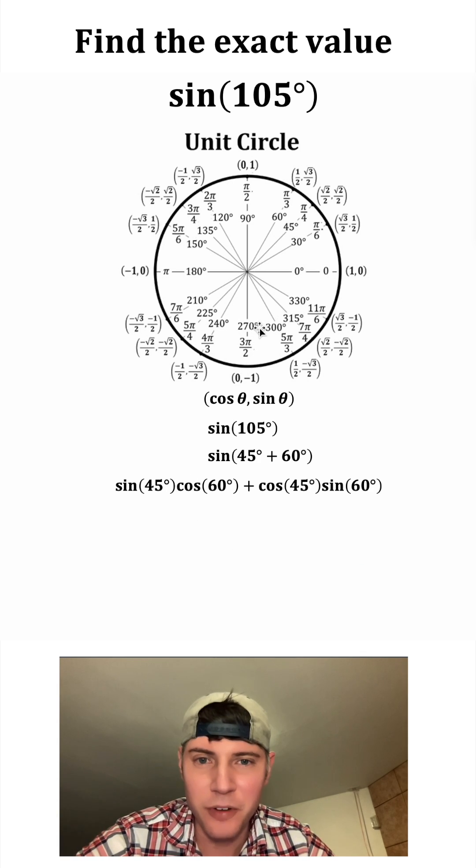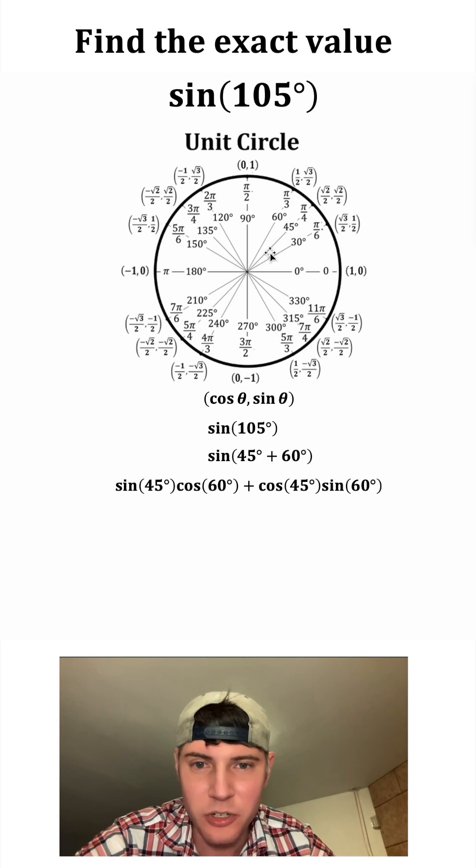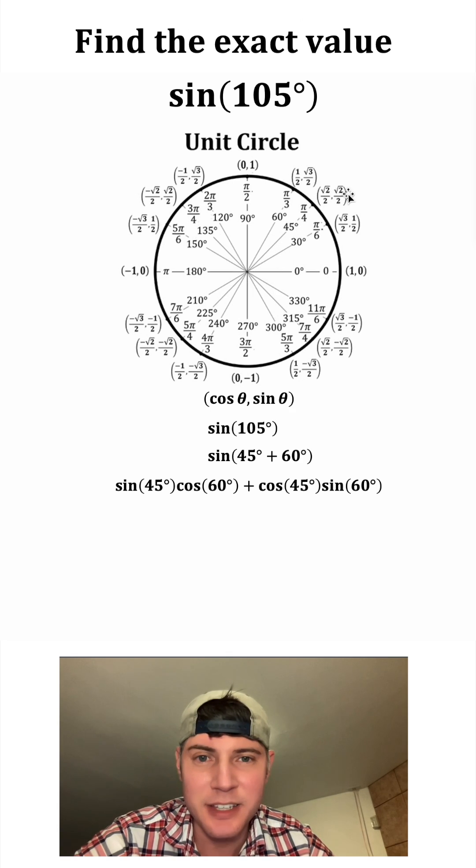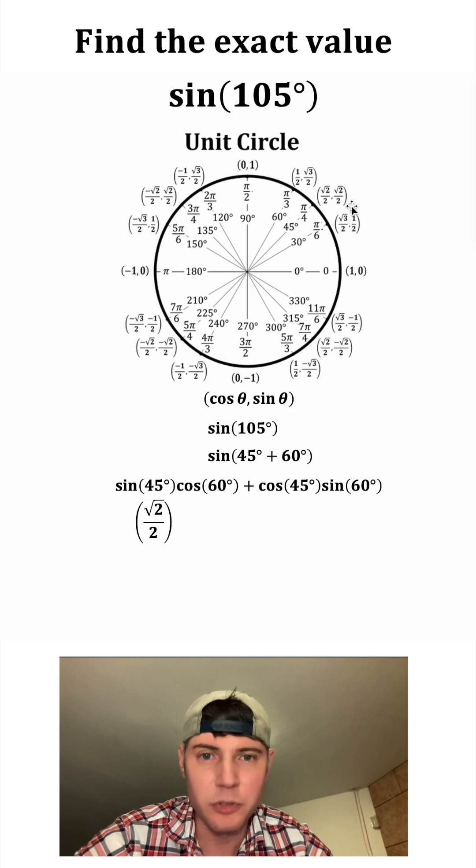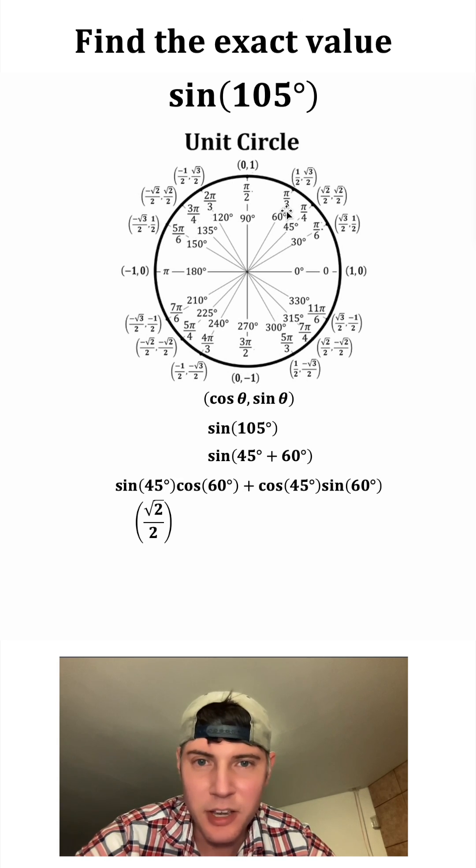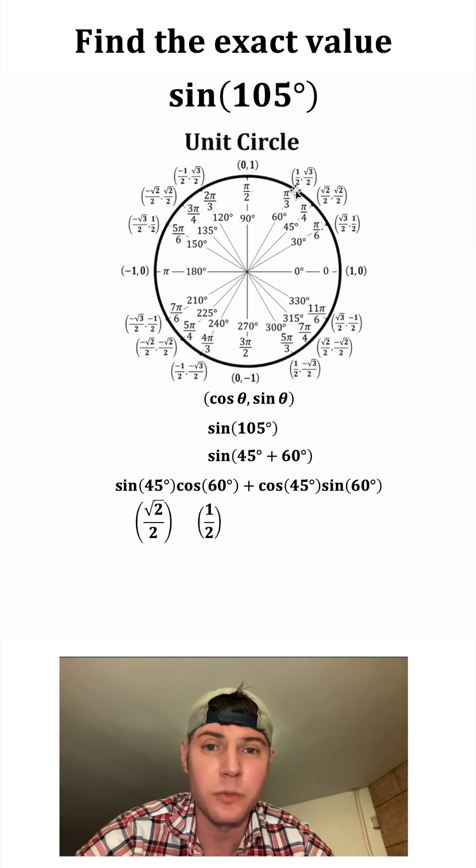Let's do the sine of 45. I'm going to find 45 on the unit circle, and I know that sine is the second value, which in this case is root 2 over 2. And then cosine of 60, I'll find 60 degrees, I want the x value, in this case, 1 half.